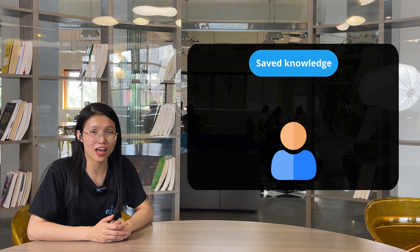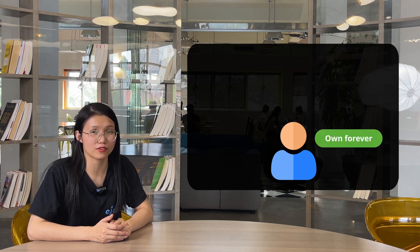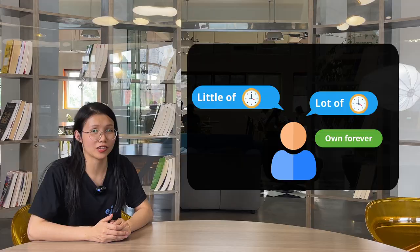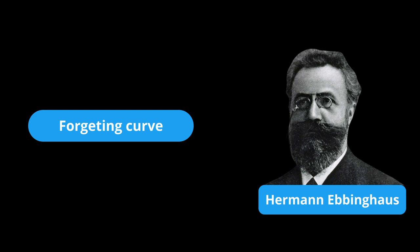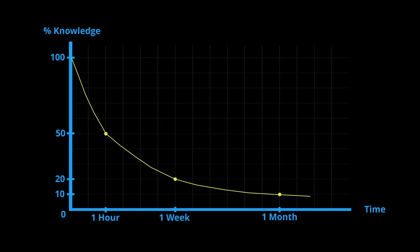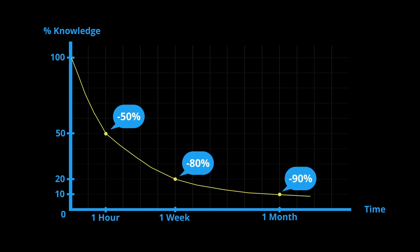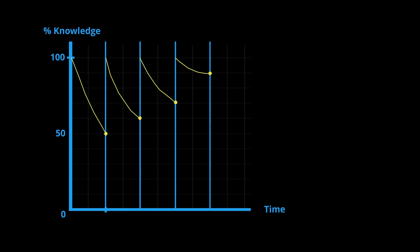After saving, eJoy will help you review to turn the saved knowledge and vocab into your world forever, whether you spend a lot or a little time on it. Let's talk about the spaced repetition algorithm that eJoy has developed based on the forgetting curve theory of the German psychologist Hermann. According to this theory, when encountering a new concept, after one hour we forget 50%, after one week we forget 80%, and after one month we forget up to 90%.